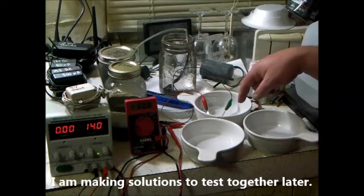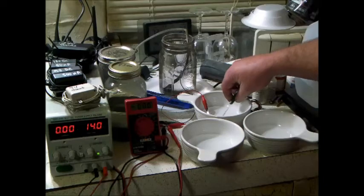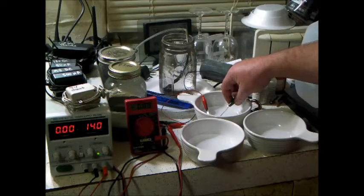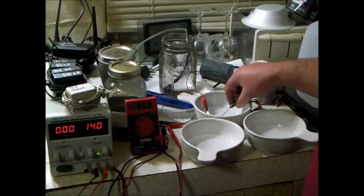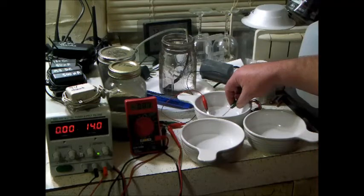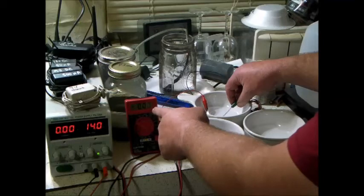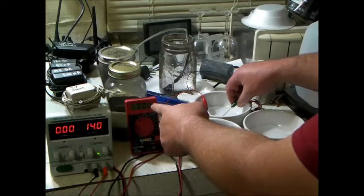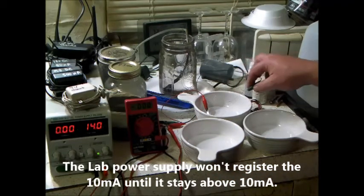Alright, now you can see how close these two contacts are. I move them apart, I move them back closer together, let's see how close I can put it before we register some voltage. Alright, now this doesn't register here, but you can see this fluctuating between 0 and 1, that's actually 10 milliamps.